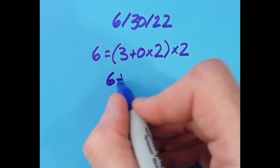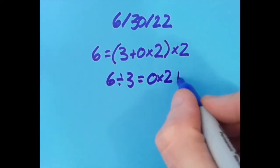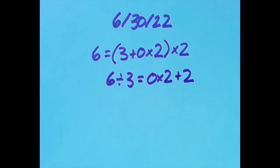So here I just said that 6÷3, which is 2, equals 0×2, which is 0, plus 2. So that gives us 2 on the left and 2 on the right, and so that works.